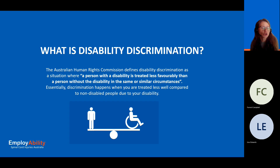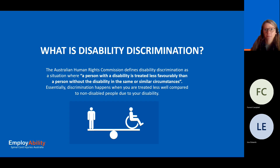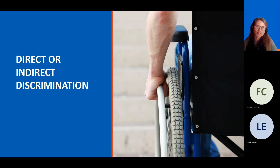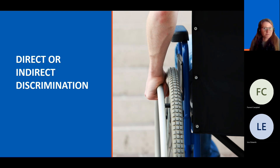We'll spend a little bit of time talking about these specific laws later in the presentation. Discrimination itself is quite a complex concept and can have different forms, but there are two main phases of discrimination. Discrimination can be direct or indirect.